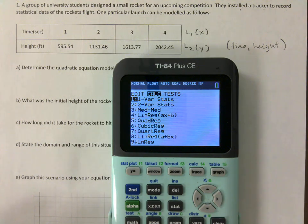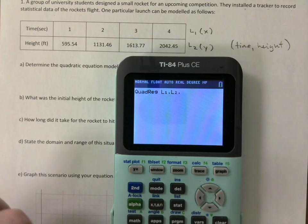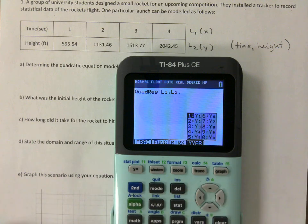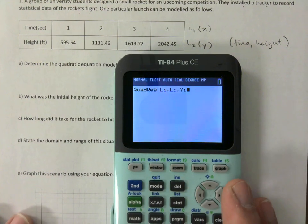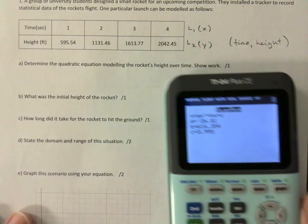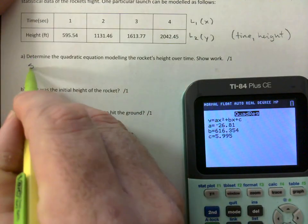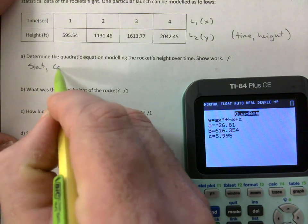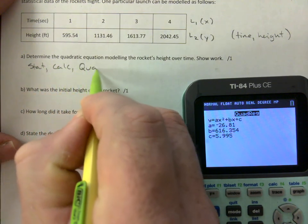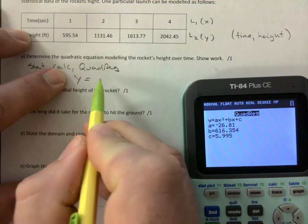There we go. So you go stat, calc, quadratic regression, second one, comma, second two, comma, alpha trace, select y1, and run it. So the first thing I would do, determine the quadratic equation. Just say stat, calc, quadratic. That's good enough.